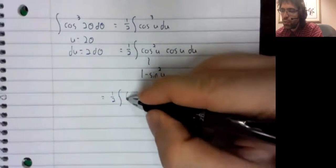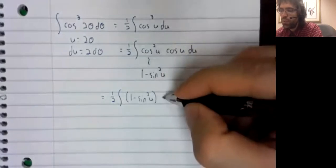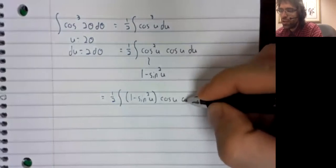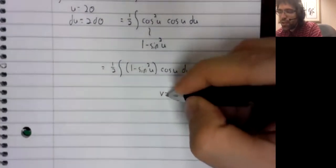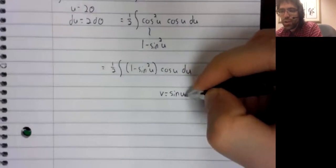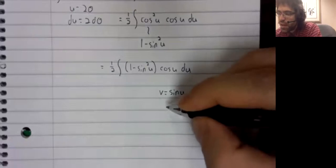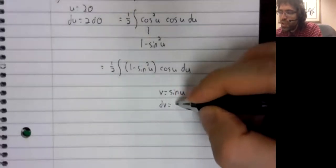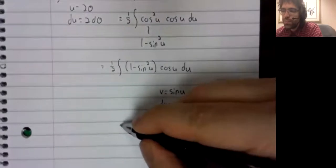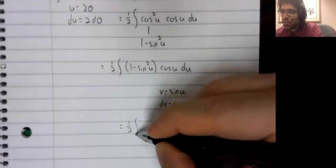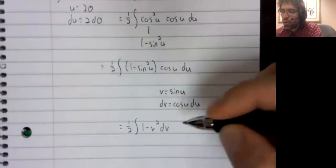One half the integral of one minus the sine squared of u times the cosine of u du. We're already using u. So we can call our substitution variable v. v equals the sine of u. dv is the cosine of u du.